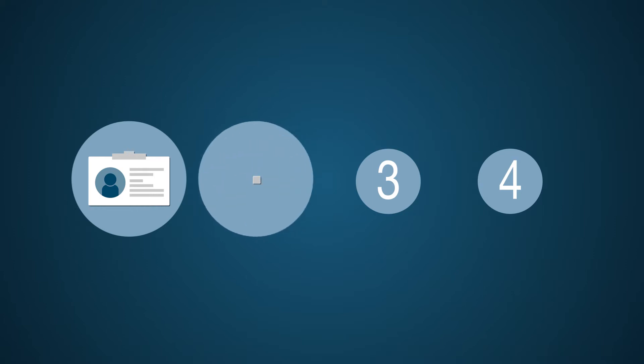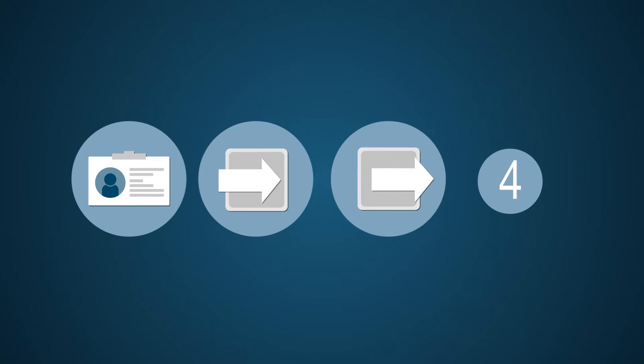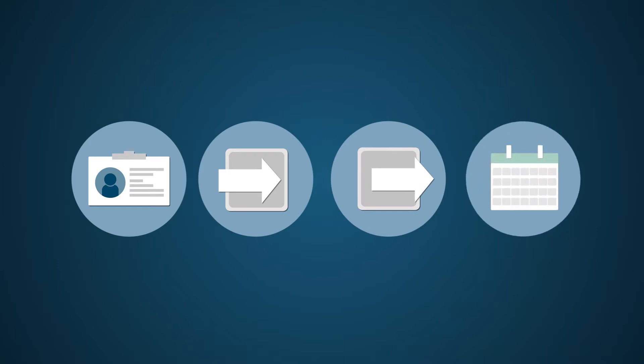Here's what the process looks like. First, you provide the source credentials so that HR service delivery can access the external system. Second, you configure and/or verify the inbound integration. Third, you repeat this step for the outbound integration. Finally, you schedule the integrations job.